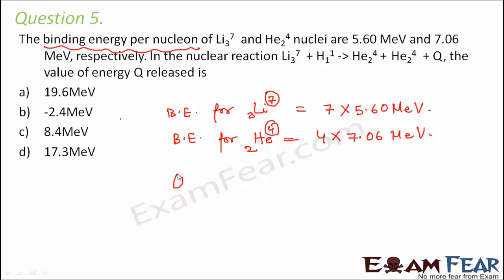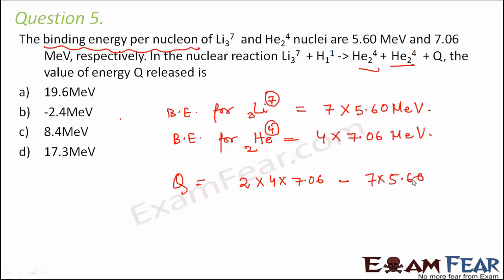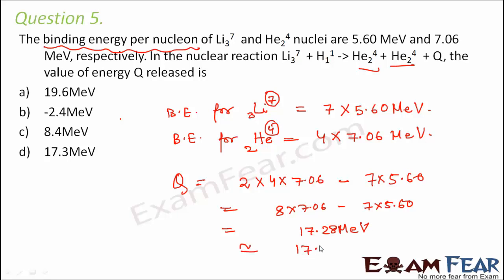Since there are 2 helium nuclei produced, the binding energy of helium will be multiplied by 2. So the total binding energy of helium products is 2 × 4 × 7.06 MeV = 8 × 7.06 MeV. Minus the binding energy of lithium, which is 7 × 5.60 MeV. This gives: 8 × 7.06 − 7 × 5.60 = 17.28 MeV, which we can say is approximately 17.3 MeV.